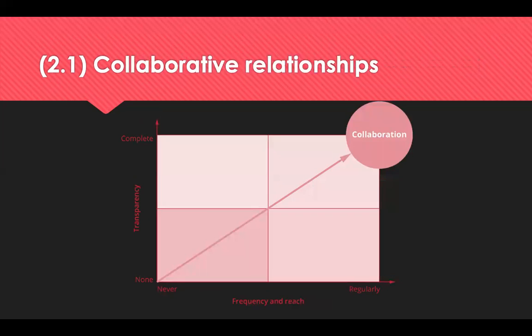A range of relationships can exist between a buyer and supplier, from competitive to collaborative, characterised by the frequency and reach of the relationship and the transparency of both parties. Competitive relationships are focused on cost, tactical, not concerned about long-term sustainability, and often referred to as win-lose. Collaborative relationships are based on sharing information, trust and respect, with both parties achieving a positive outcome — focused on win-win, promoting joined-up thinking and innovation, but requiring much more time and effort to maintain.